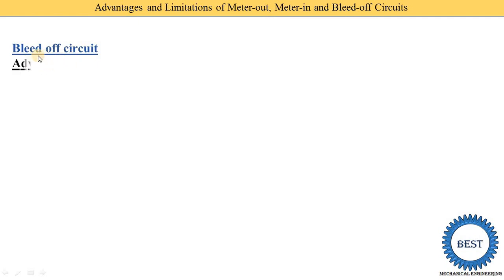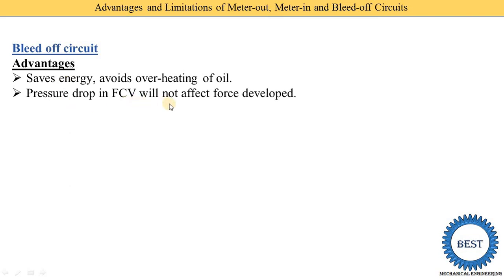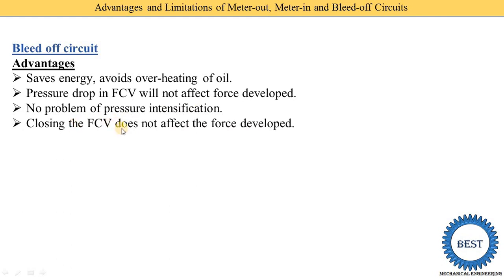Next, the advantages of the bleed off circuit. The bleed off circuit saves energy and avoids overheating of oil, because the extra oil is directly supplied through a bypass line and from the bypass line the oil goes directly to the reservoir — so there is no overheating of the oil, which means energy is saved. Also, pressure drop in the flow control valve will not affect the force developed, there is no problem of pressure intensification, and closing the FCV does not affect the force developed.